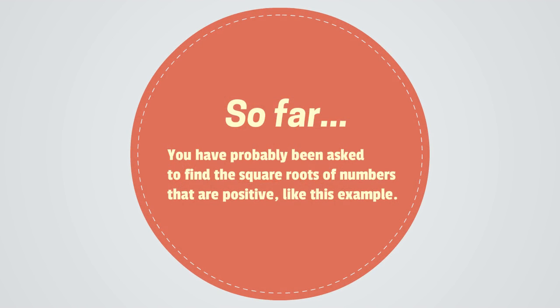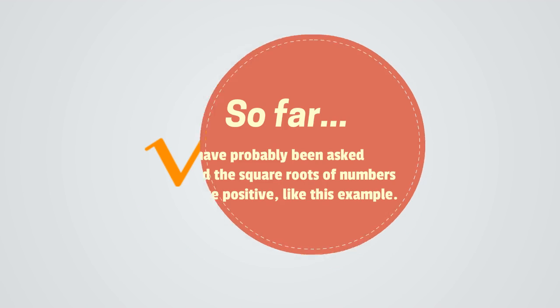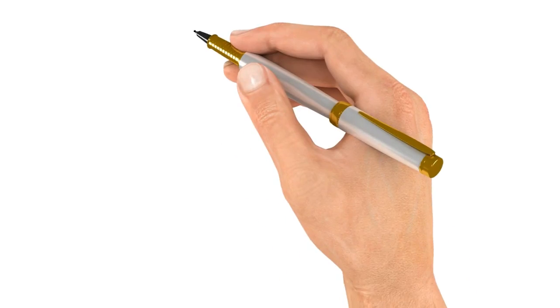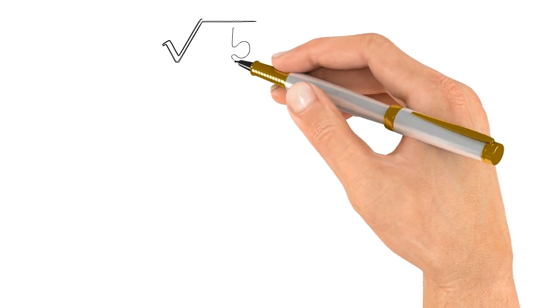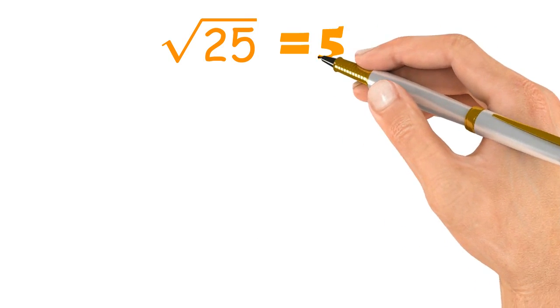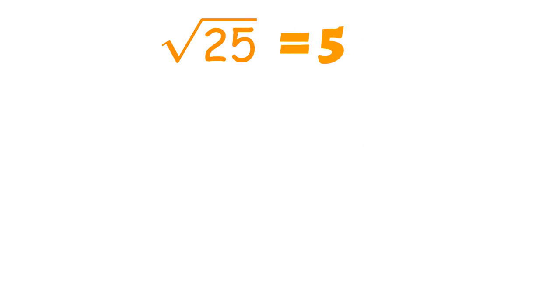So far, you have probably been asked to find the square roots of numbers that are positive, like this example. Can you find the square root of 25? The square root of 25 is equal to 5 because 5 times 5 is equal to 25.